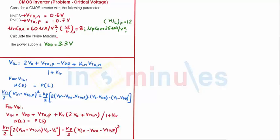Welcome to in 5 minutes. The agenda of this clip is to solve one of the problems on CMOS inverter in which we will try to identify the noise margin or the critical voltages. Critical voltages as we know is nothing but VOL, VOH, VIL and VIH. So let's quickly see the question.